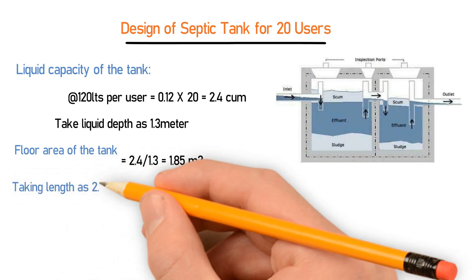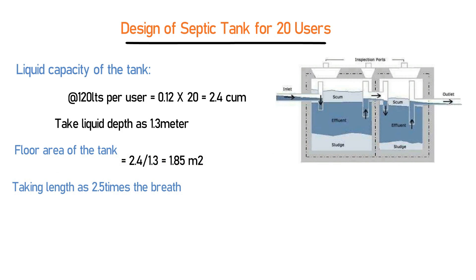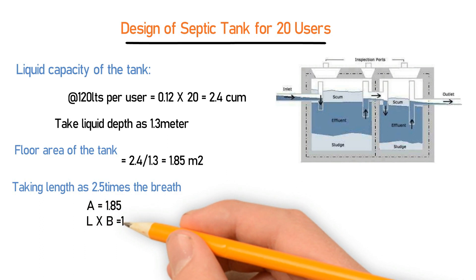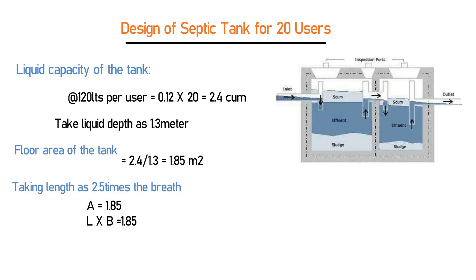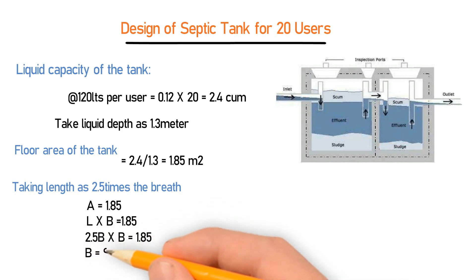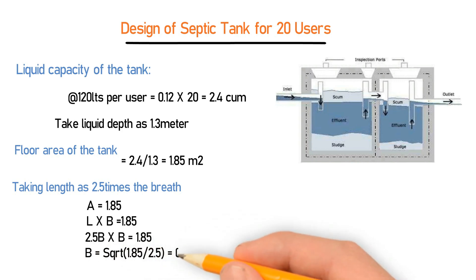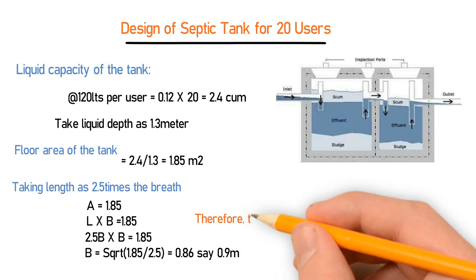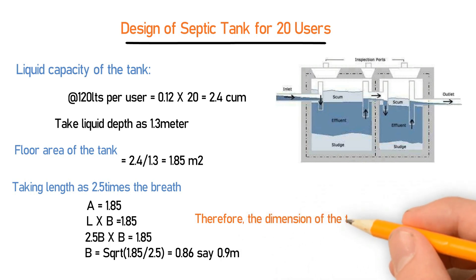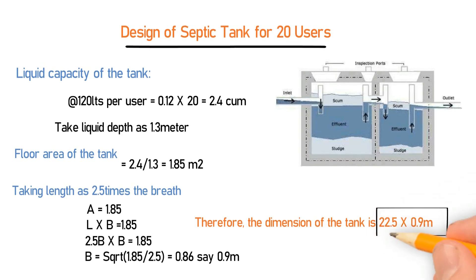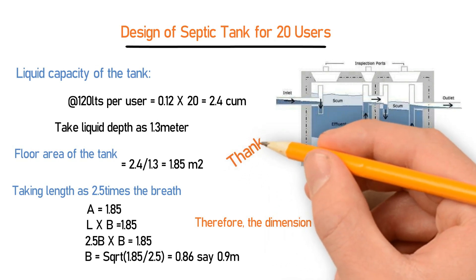Since the floor area is 1.85 m², and the length is 2.5 times the breadth, we have: 2.5b × b = 1.85, so b = √(1.85 ÷ 2.5) = 0.86 m, which we round up to 0.9 m. Therefore, the dimensions of the septic tank for 20 users are 2.25 m × 0.9 m.